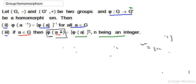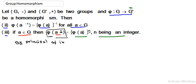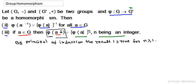Thus by the principle of induction, the result phi(aⁿ) equals phi(a)ⁿ is true for all n greater than or equal to 1, that is, for all positive integers. This may come in your exam, so make sure you understand this proof.